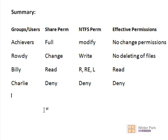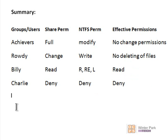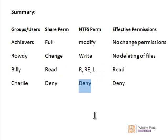Then we added the Billy domain user account — not a local account, but a domain user account. We gave Billy the Read Share permissions and the three Read NTFS permissions: Read, Execute, and List. This gives Billy effective permissions of Read. Finally, we added Charlie, which is a local account. We gave Charlie the Deny Share permission and the Deny NTFS permissions, which makes his effective permissions — his overall permissions — Deny.